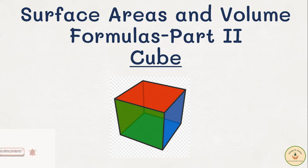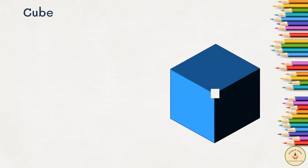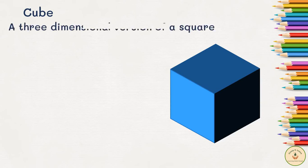Now, talking about a cube, a cube is nothing but a three-dimensional version of a square, similar to what we saw in the previous video where we talked about the cuboid, which was a three-dimensional version of a rectangle.